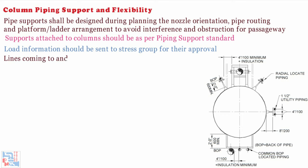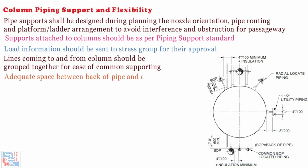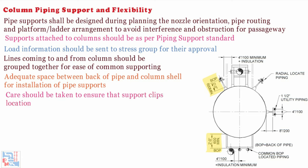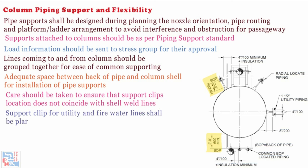Lines coming to and from columns should be grouped together for ease of common supporting. There should be adequate space between back of pipe and column shell for installation of pipe supports. Care should be taken to ensure that the support clip's location does not coincide with shell weld lines. Support clip for utility and fire water lines shall be planned along with other clips.